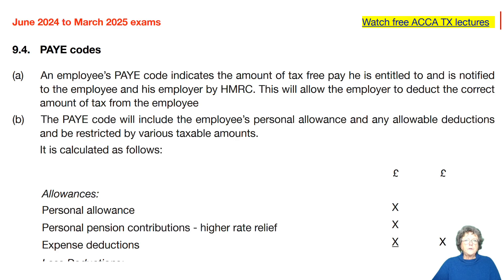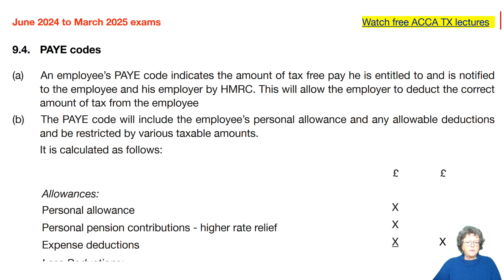The final part of this chapter is very much admin-based, related to employment income. The topic at 9.4 is the pay-as-you-earn codes.